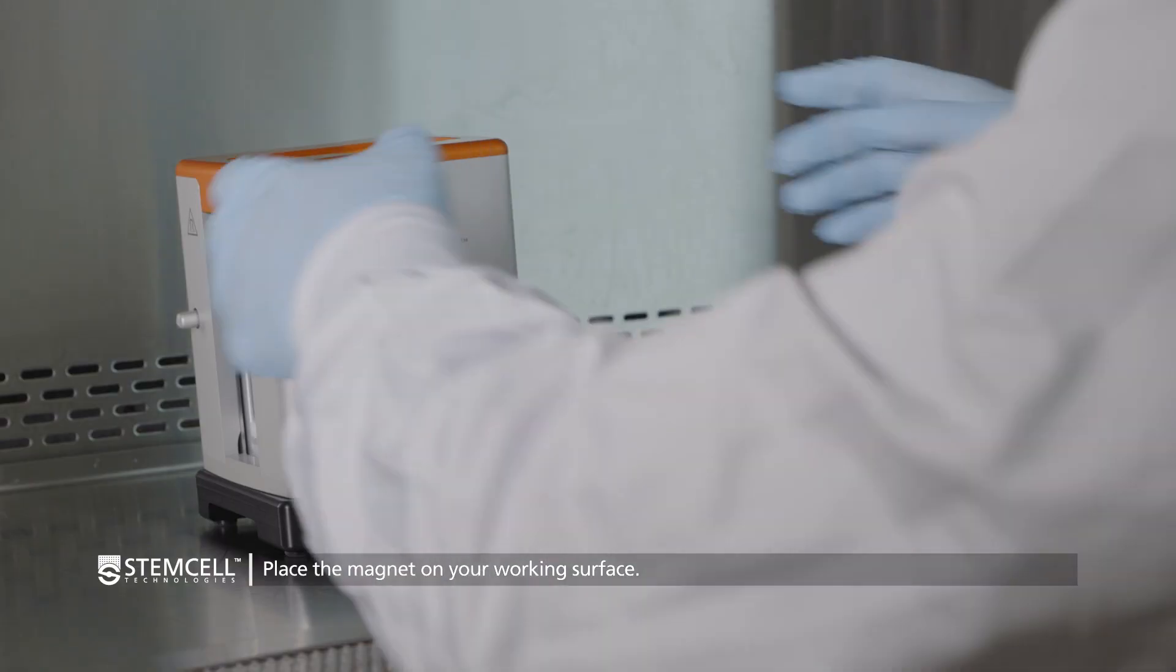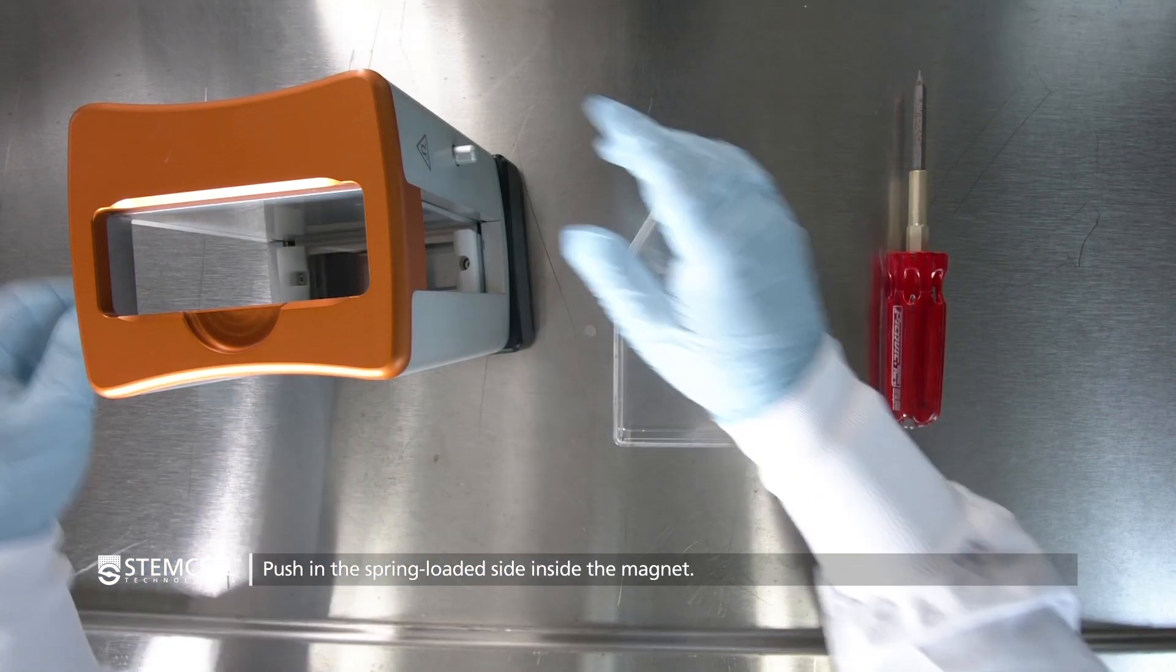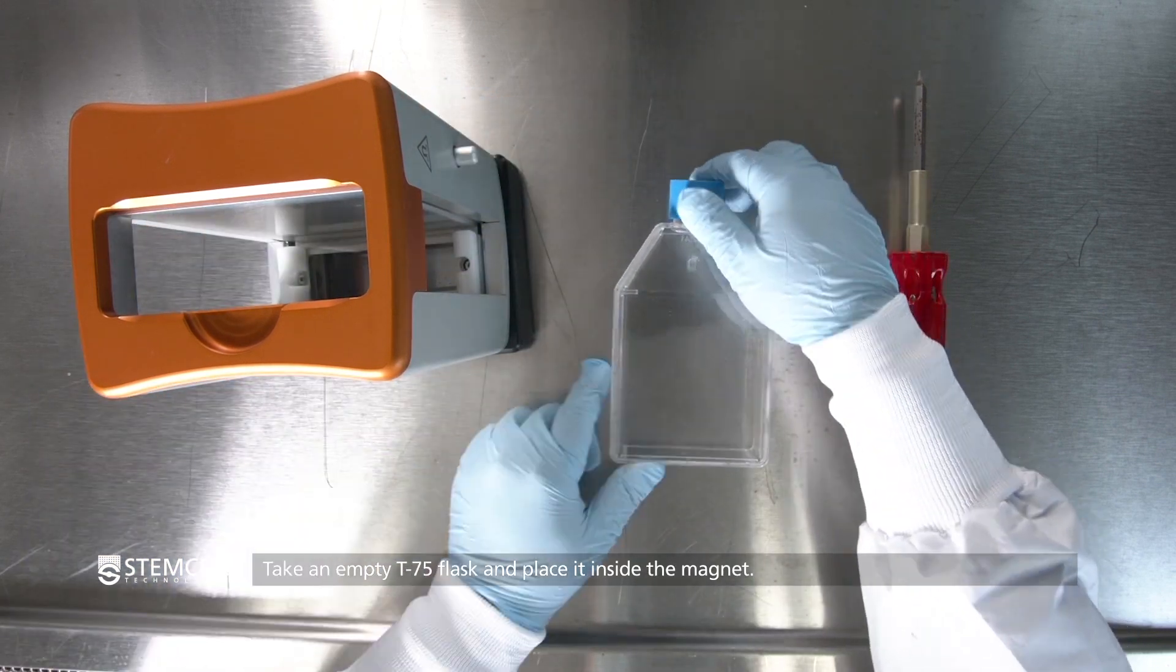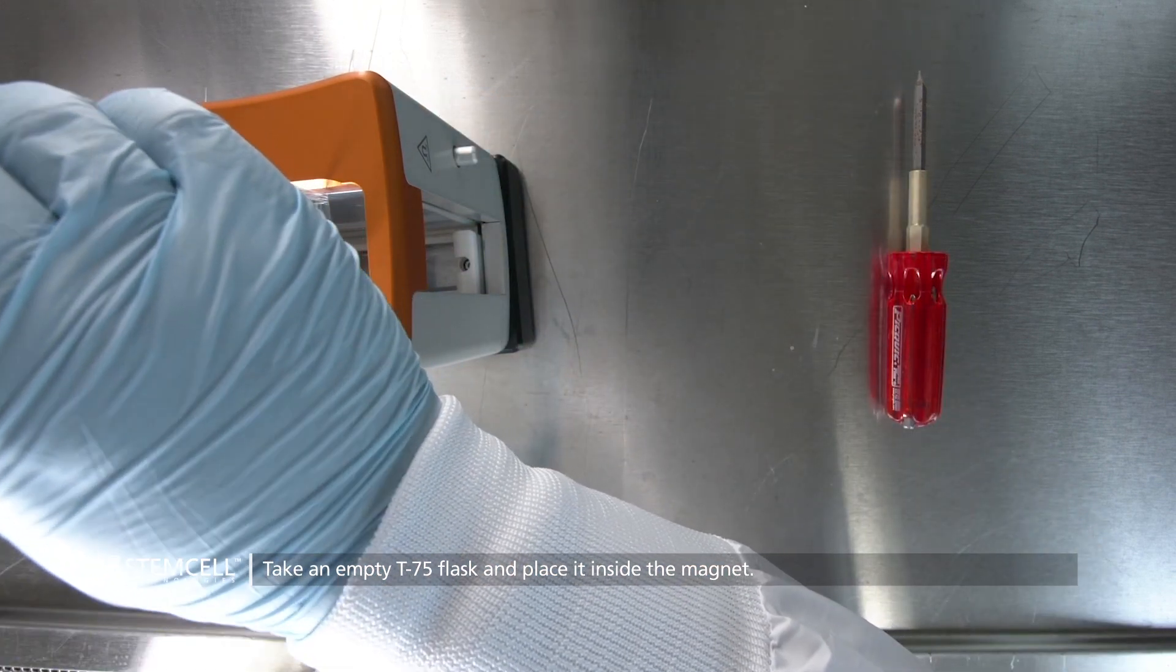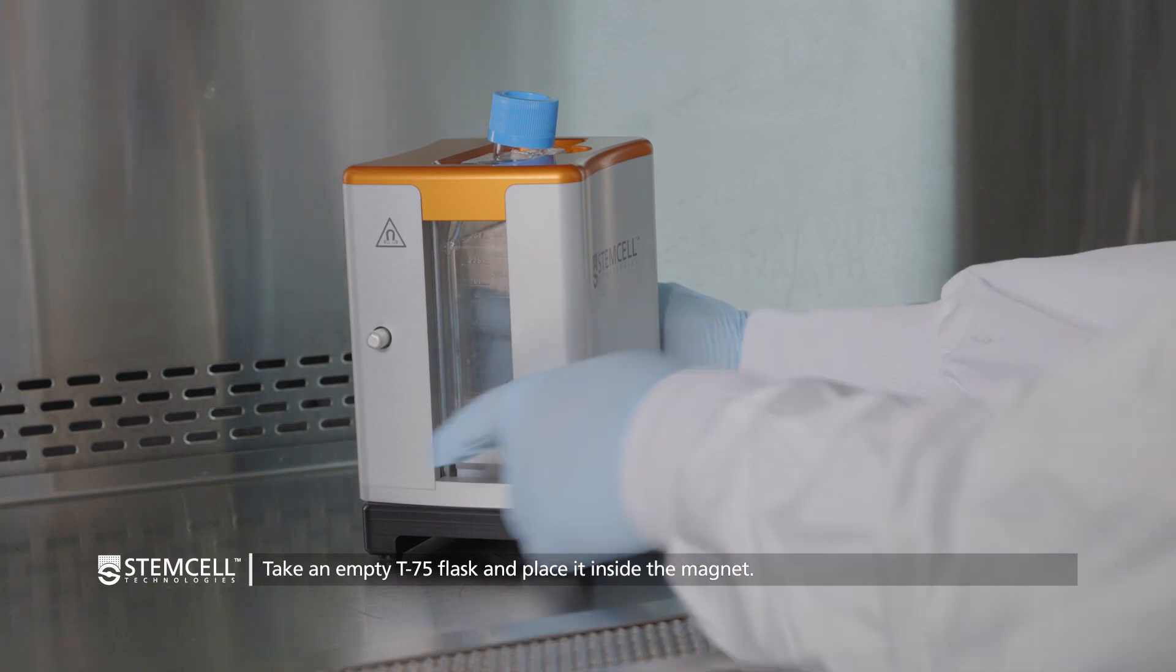First, place the magnet on your working surface and push in the spring-loaded side inside the magnet. Then, take an empty T75 flask and place it inside the magnet.